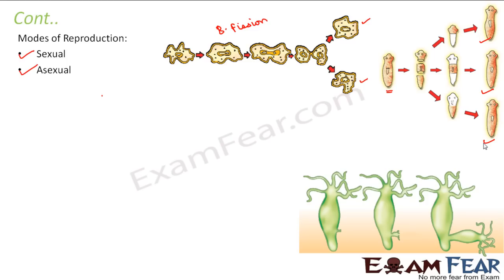In hydra, they reproduce by budding. In hydra, they have tentacles, and a small bud — a small outgrowth — appears somewhere on their body. This bud gradually starts growing into a new organism. Once it becomes mature, it detaches itself from the parent organism. That is how budding takes place and they reproduce asexually.